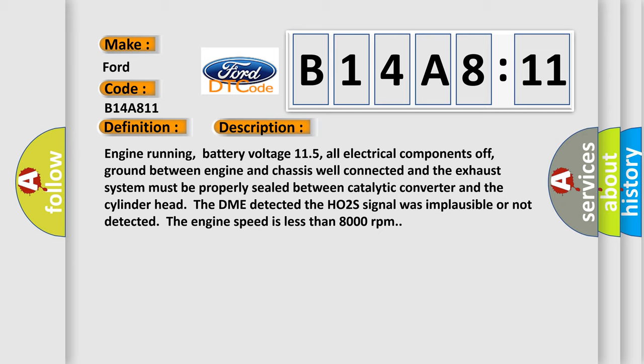Engine running, battery voltage 11.5, all electrical components off, ground between engine and chassis well connected. And the exhaust system must be properly sealed between catalytic converter and the cylinder head. The DME detected the HO2S signal was implausible or not detected. The engine speed is less than 8,000 revolutions per minute.